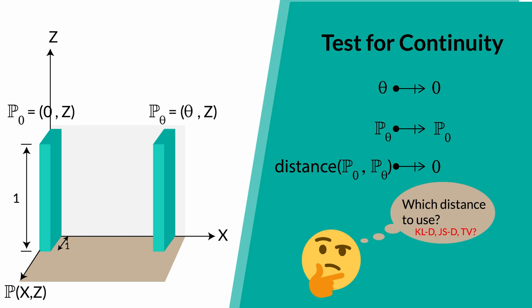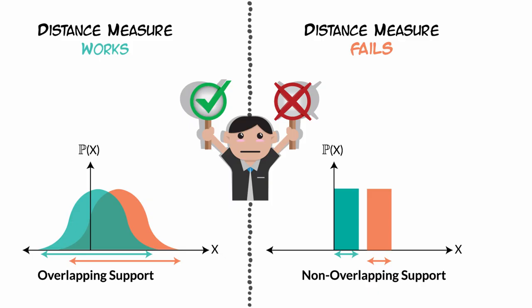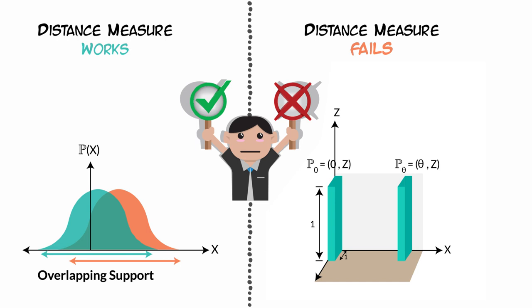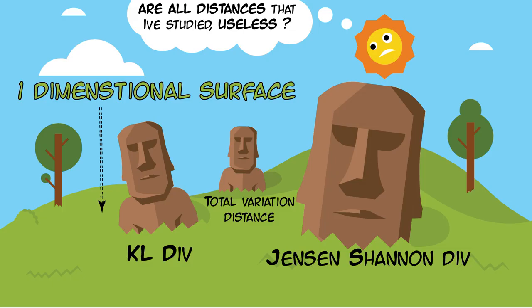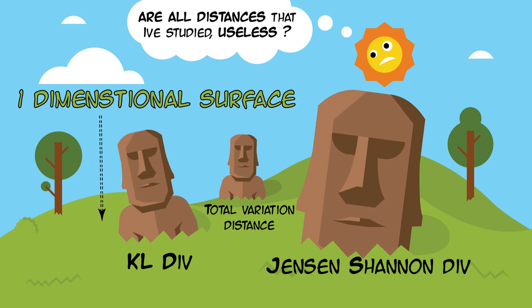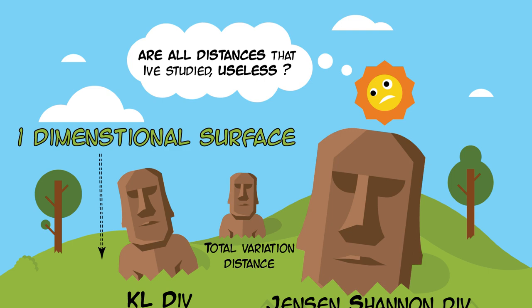The problem with most of the popular distance measures is that they fail miserably if the distributions don't share the support or don't overlap even a tiny bit. The distribution may be very close, like these two parallel lines, but all these distance measures will fail to recognize it. Does this mean that everything that we studied, like KL divergence, Jensen-Shannon divergence, are only great for 1D? In a way, yes, because in 1D they are forced to share the support to some extent, but not anymore for multi-dimensional distributions.